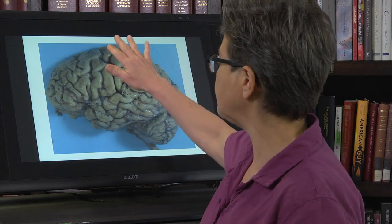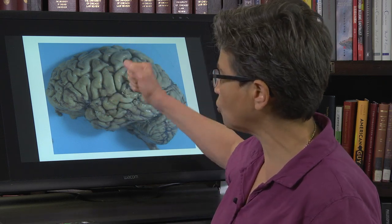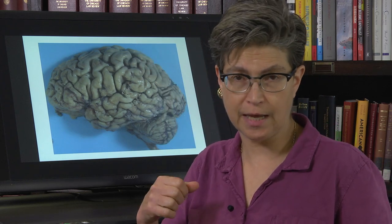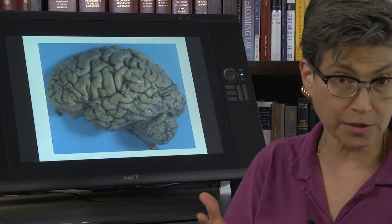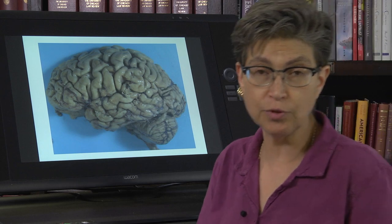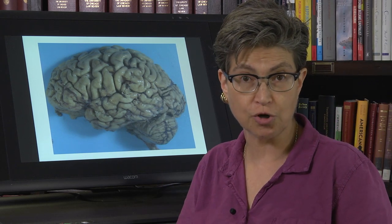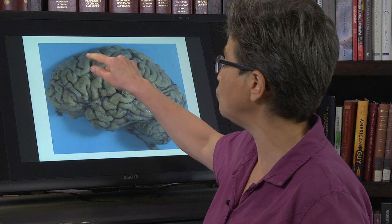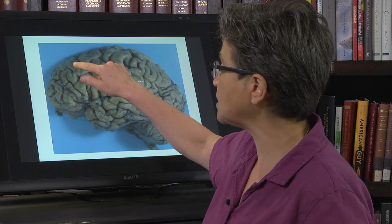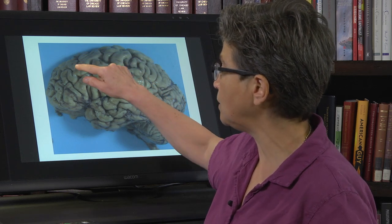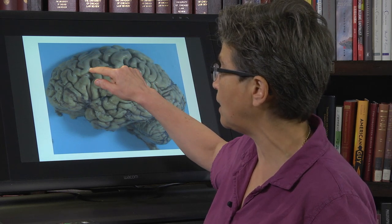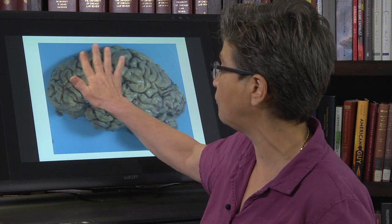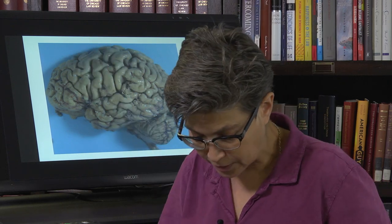The motor cortex is more of an executor than it is the boss — it really likes to take instructions from other places. There are two really important areas: the supplementary motor area and the premotor cortex, which are just in front of motor cortex.